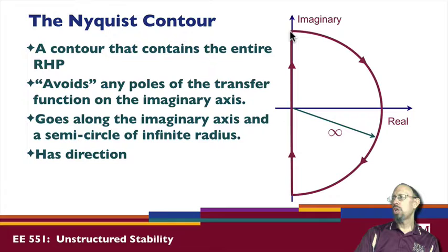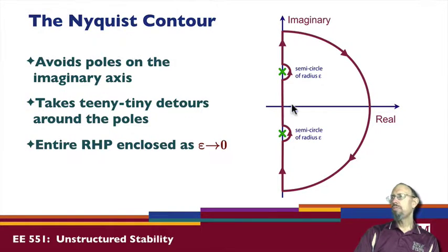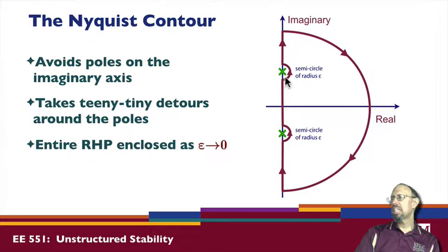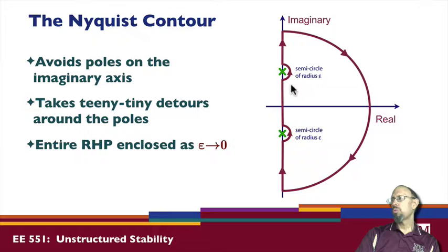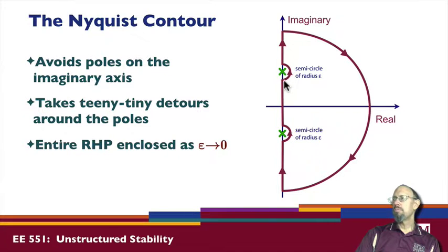The contour would start, go up along the imaginary axis, go around the semicircle of radius infinity, and then go up along the negative real axis. If we have poles on the imaginary axis, the contour needs to avoid them and yet still include the entire right-half plane. To avoid them, we take little semicircular detours of radius epsilon where epsilon goes to zero, and in doing so we encapsulate the entire right-half plane while avoiding the poles on the imaginary axis.